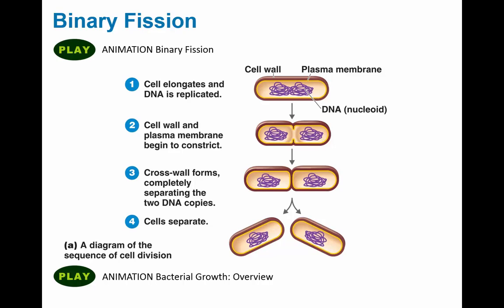For things like E. coli, this cycle of starting the duplication process to finishing the duplication process could happen in 15, 16, or 17 minutes. So you can get double the number of cells almost four times an hour, which makes for a really quick growth process.